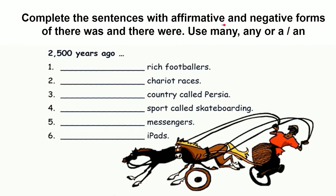Complete the sentences with affirmative and negative forms of 'there was' and 'there were' — either 'there was', 'there wasn't', 'there were', or 'there weren't' — with the use of many, any, a, or an. For example: 2,500 years ago, there weren't any rich footballers. You need to complete this exercise in the Google Form link provided below. Make sure you click 'turn in' on Google Classroom. After you complete your exercise in Google Form, click the submit button and you will get the answers immediately.